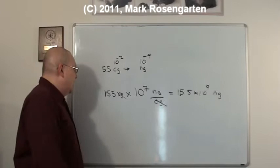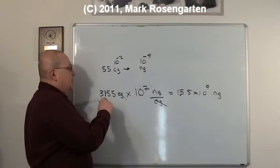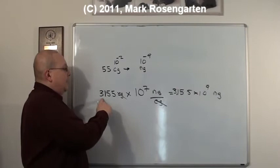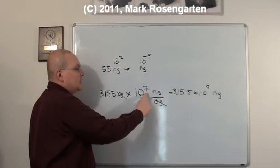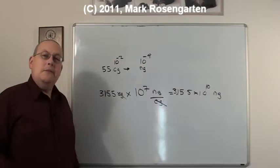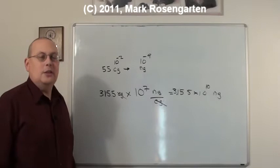If it was 3,155 centigrams, then it would be 3.155 times 10 to the whatever. Since we have to make this smaller by 1, 2, 3 powers of 10, we have to make this larger by 3 powers of 10. So doing conversions with scientific notation is actually really easy. In fact, in some ways, it's easier than using the ones with all the zeros after it.